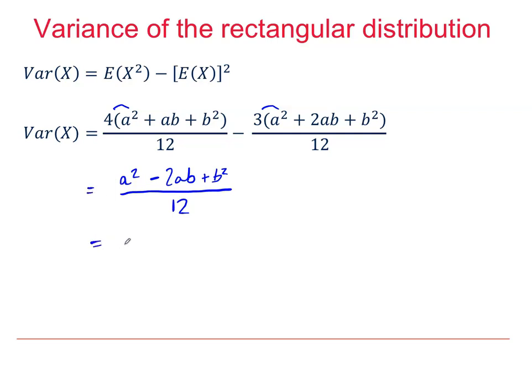And the numerator, of course, does factorize, and the way we're going to factorize that is B minus A squared over 12. It wouldn't matter if you put it the other way around, of course, because if you square something that's negative, then it will finish up being positive.